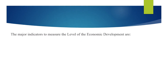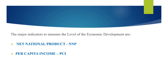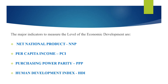The major indicators to measure the level of economic development are net national product (NNP), per capita income (PCI), purchasing power parity (PPP), and human development index (HDI). Now, let us see what is net national product.